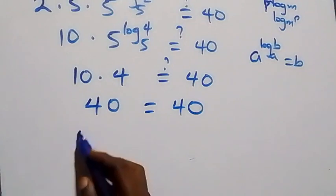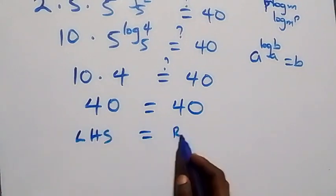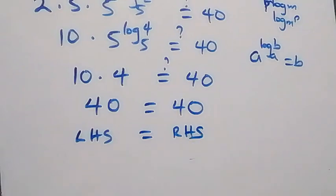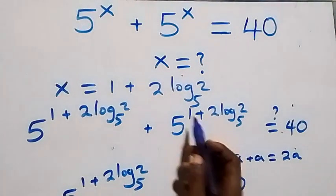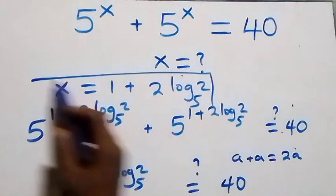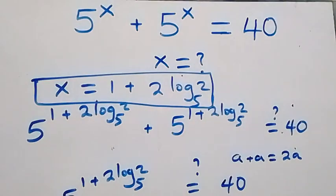The left-hand side equals the right-hand side, and hence we conclude that x equals 1 plus 2 log₅2 satisfies the given problem. Thank you for watching at Master T Math Class. Don't forget to subscribe for more videos, turn on the notification bell, share this video, give it a thumbs up, put your comment, and join our membership package. Thank you, see you next class — bye for now!